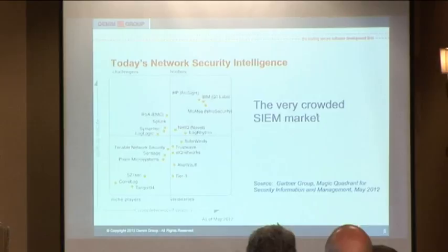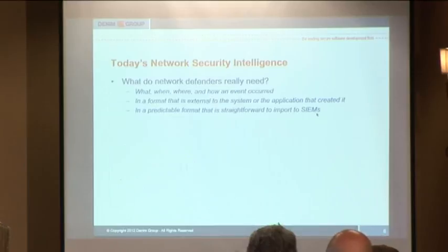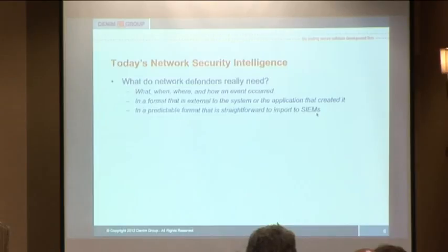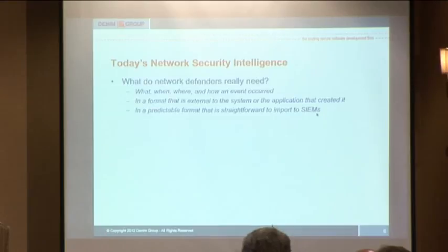If you went back to the late 90s, there were companies that started sucking logs, and the basics in blocking and tackling this area were: what happened, when, and how — but in a format that's structured and importable in a predictable way. Then you can start to understand it, and you can turn the gain up or down during certain incidents. In the Air Force, we would look at certain types of TCP ports within certain systems, and if we perceived suspicious activity, we would turn up the gain — log more information and more ports. We looked at systems around those to see what DNS was doing at the same time, getting more context. That's what you want on the network side.